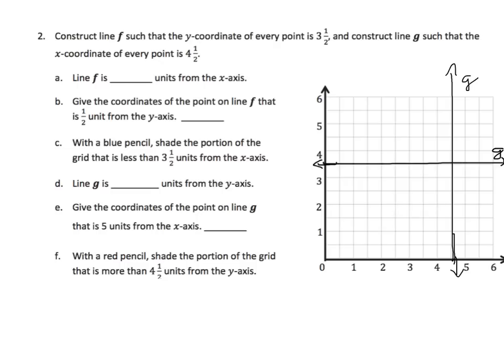Now let's answer the questions. Line F is blank units from the x-axis. Let's make our way up from the x-axis: up 1, 2, 3, 3 and 1 half. Line F is 3 and 1 half units from the x-axis. We notice that the y-coordinate is 3 and 1 half, which means the line is 3 and 1 half units from the x-axis.